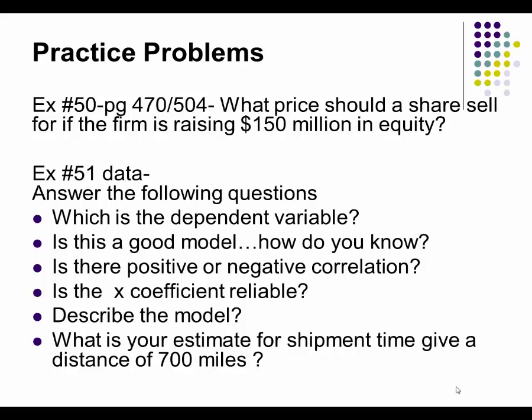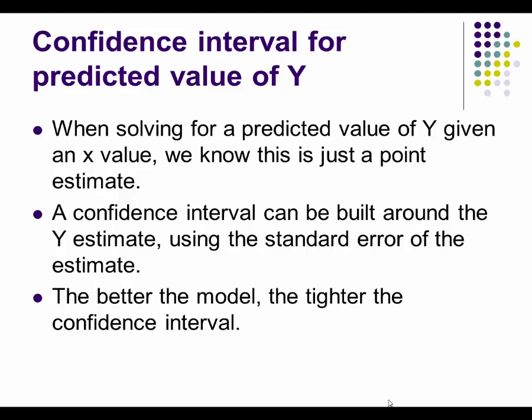In this segment of the lecture, we will begin to calculate confidence intervals for the predicted value of y. Up till now, we've used the model to predict the dependent variable y — keep in mind this is just a point estimate, and it is highly unlikely the predicted value will actually match the actual value. However, we can estimate a range of values between which the actual value will fall. When R-squared is high — that is 0.80 or more — the tighter the confidence interval will be, indicating a better model.